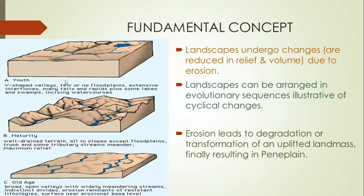Before moving on, there are two important terms: absolute relief and relative relief. Absolute relief means the highest relief in a given area — this is maximum in the youth stage. Because there is no significant lateral erosion in the youth stage, the divides cannot be eroded, so the upper limit remains constant and the absolute height is at its maximum.